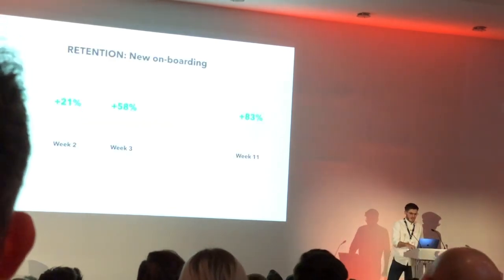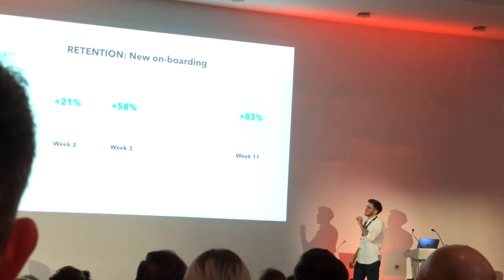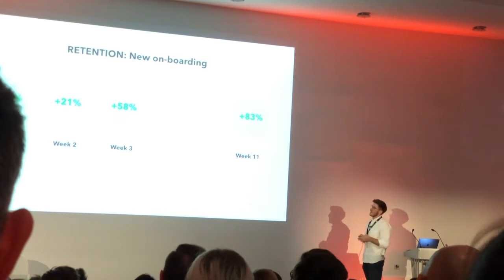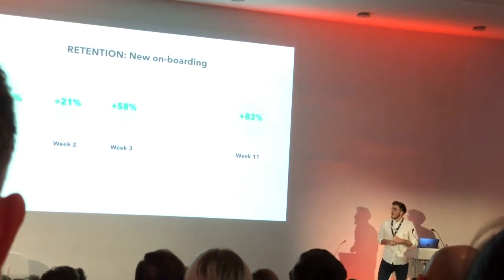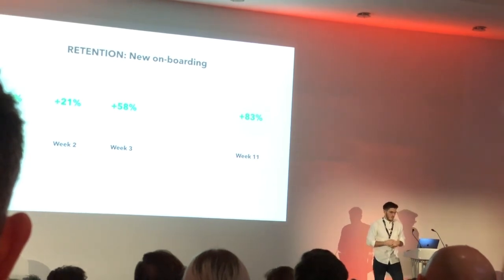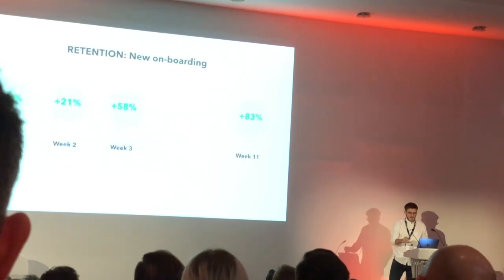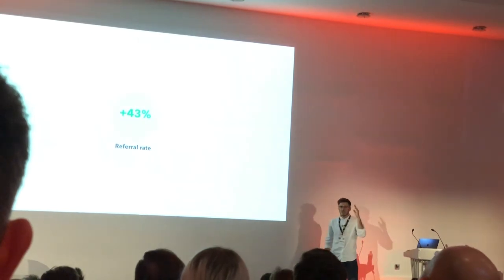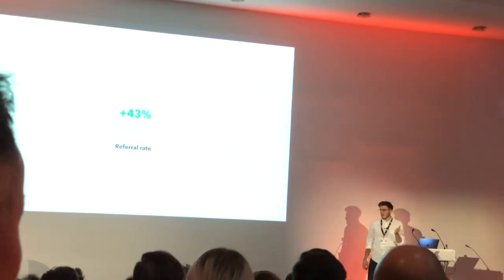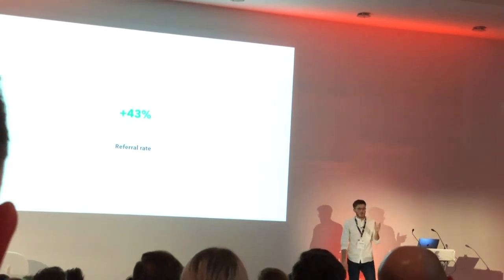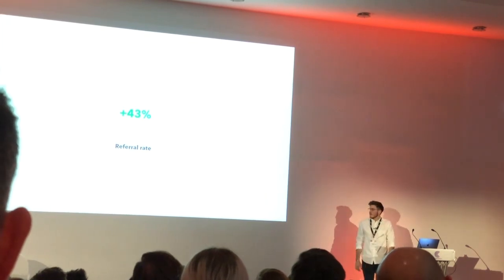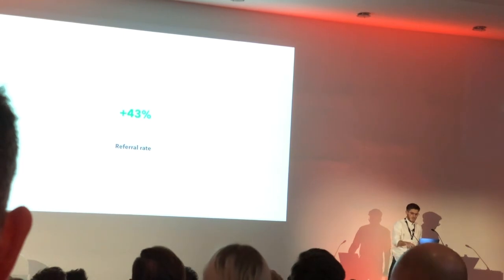This lined up with our one metric that did do well — retention. We dived into the retention metrics and saw that for the cohort of users who came through the new onboarding, we saw an uptick in retention: week one was up 50%, week two 21%, week three 58%, and week eleven was 83%. We managed to keep 83% more people all the way through to week eleven. At that point we were happy to sacrifice that 4% at the front end. We also saw a 43% higher referral rate among those users, which we put down to the content feeling more relevant to them. So we deemed it a success.